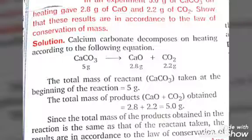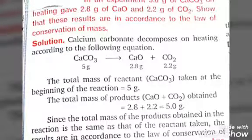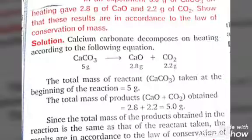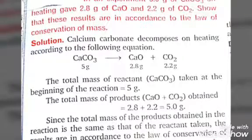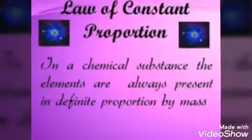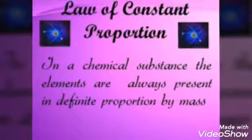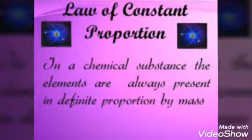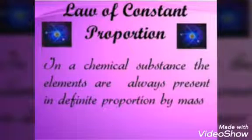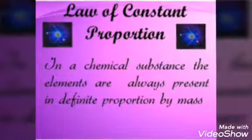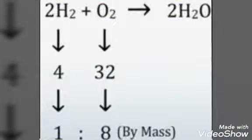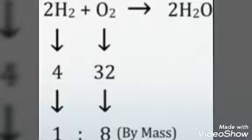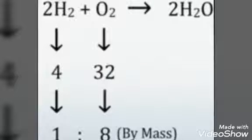Here, the masses of reactants and products are equal, which shows that it follows the law of conservation of mass. Law of constant proportion: In a chemical substance, the elements are always present in a definite proportion by mass, no matter how that compound is formed. In water, hydrogen and oxygen are always present by mass in a ratio of 1:8.